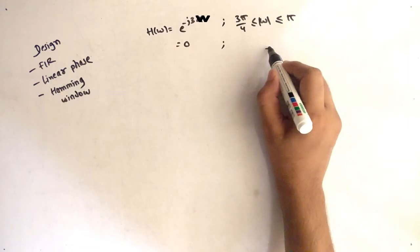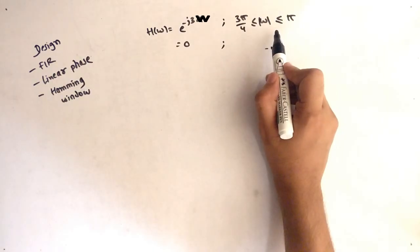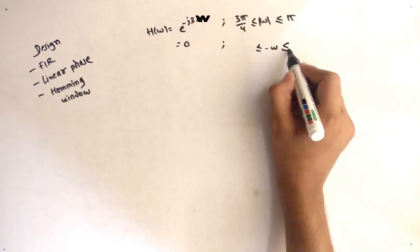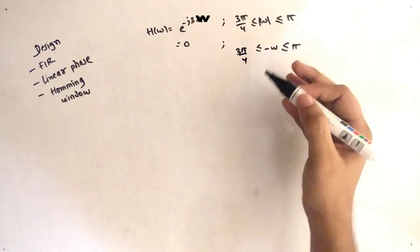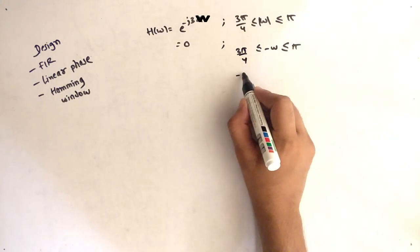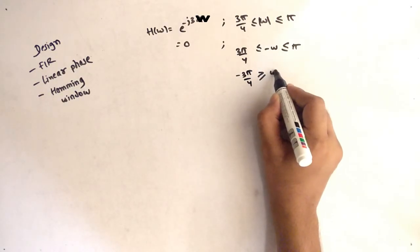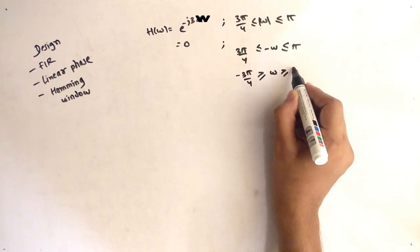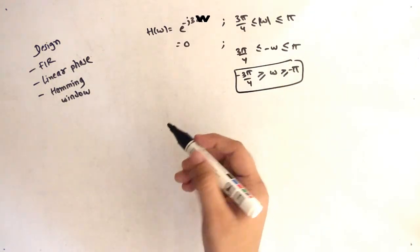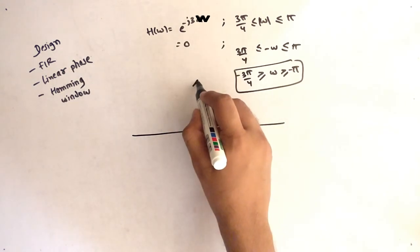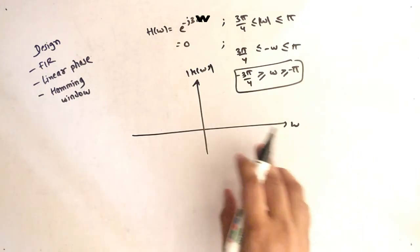The mod sign means we also consider negative values. For negative ω, we multiply minus on both sides which changes the sign, giving us a second range. So let's plot |H(ω)| vs ω.